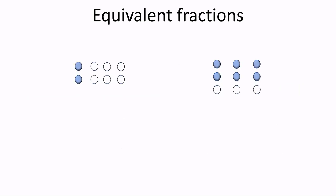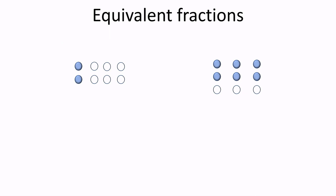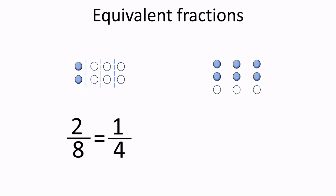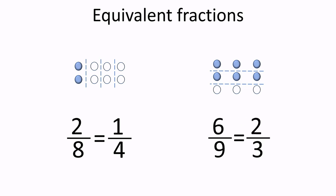Let's practice. In the first set of circles, we have two circles shaded out of a total of eight circles. If we look closer, we will notice that we have four columns of two circles, and the first column has all circles shaded, so we can also write this fraction as one shaded column out of four total columns, or one-fourth. In the second set, we have six circles shaded out of nine. We have three rows of three circles, and the first and second rows are fully shaded, so we can write this as two shaded rows out of three total rows, or two-thirds.